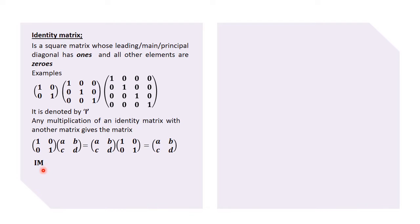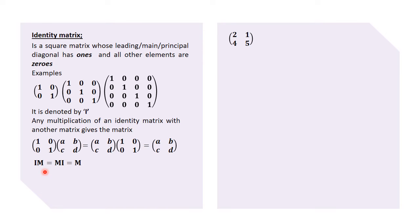We also represent this using symbols: IM = MI = M, meaning that the identity matrix times a matrix, or a matrix times the identity matrix, gives us that particular matrix. That symbolic statement captures the same explanation made earlier.